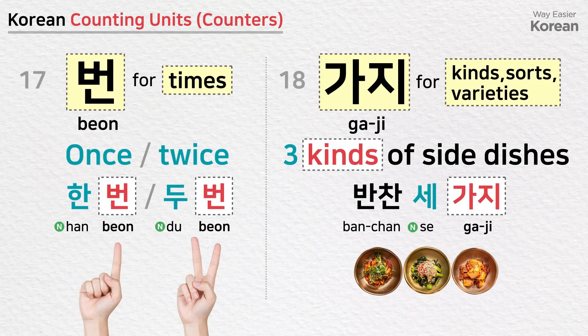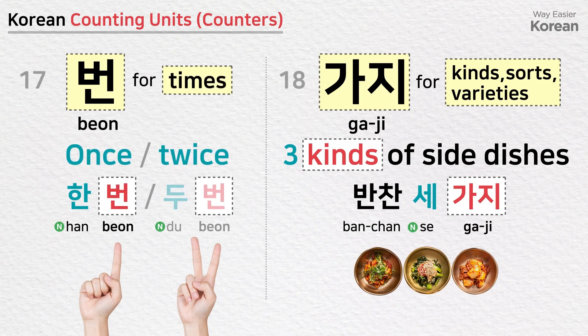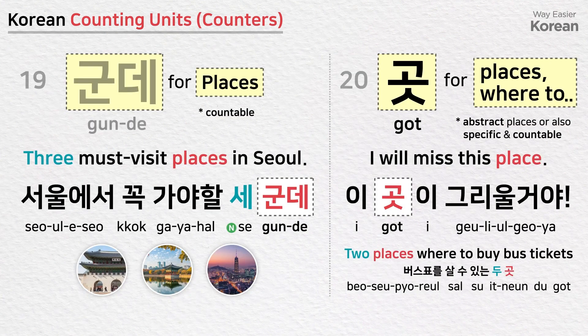번 is a counting unit for times: once — 한 번; twice — 두 번. 가지 is a counting unit for kinds, sorts, or varieties: three kinds of side dishes — 반찬 세 가지. 군데 is a counting unit for places: three must-visit places in Seoul — 서울에서 꼭 가야 할 세 군데.